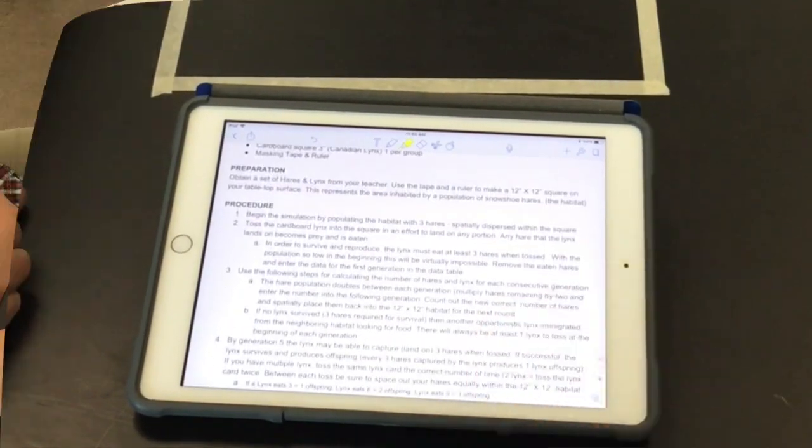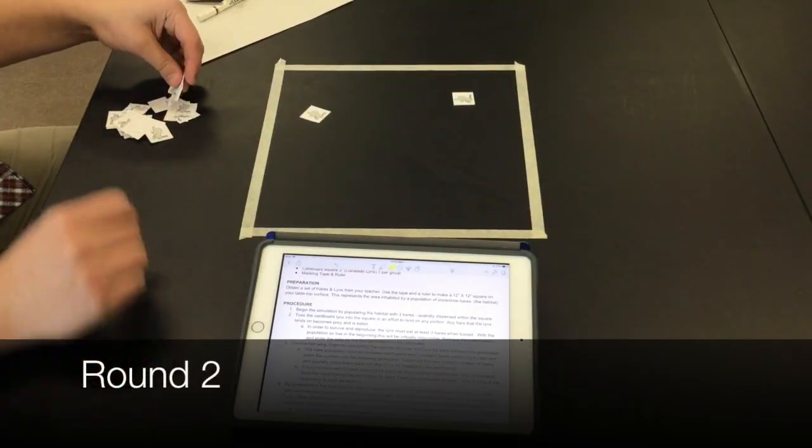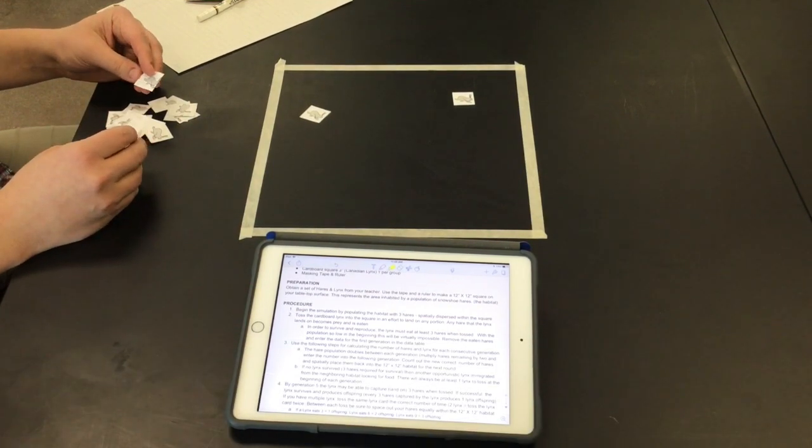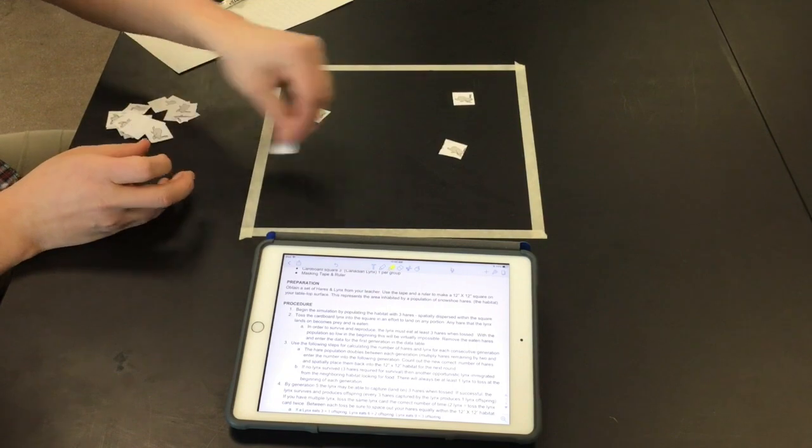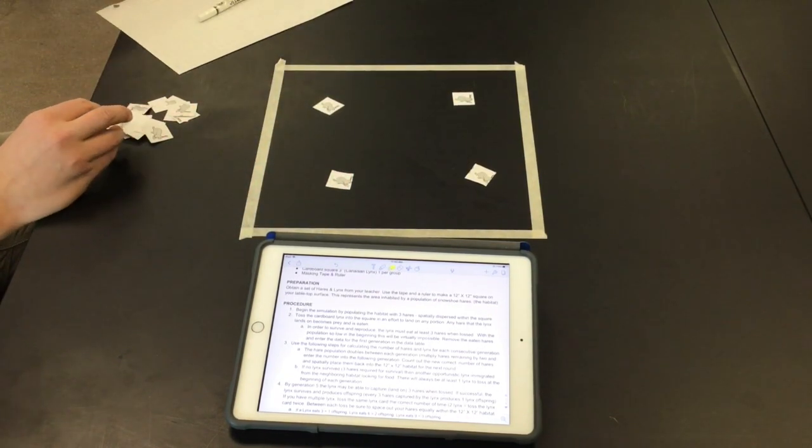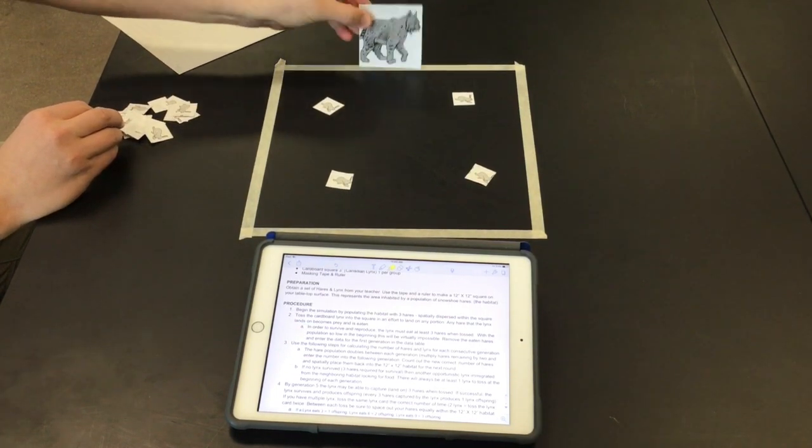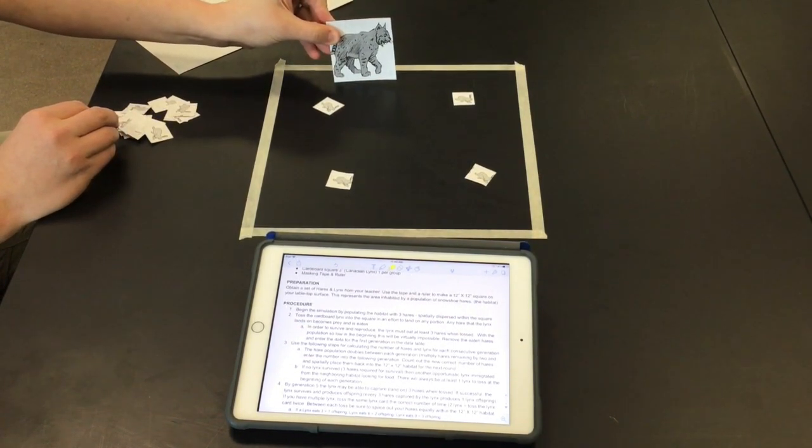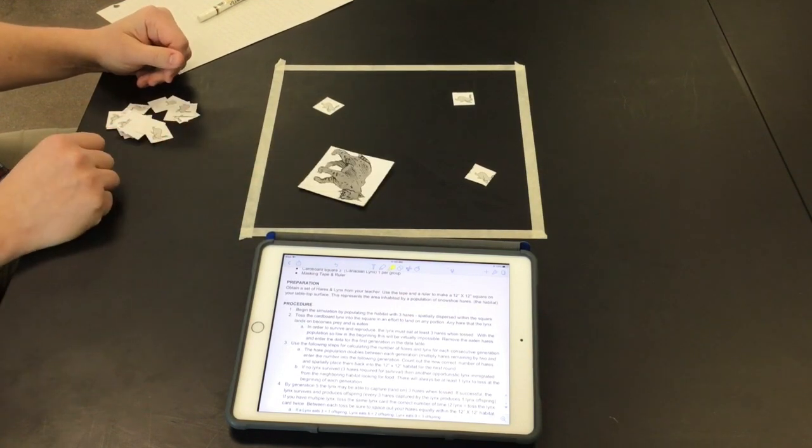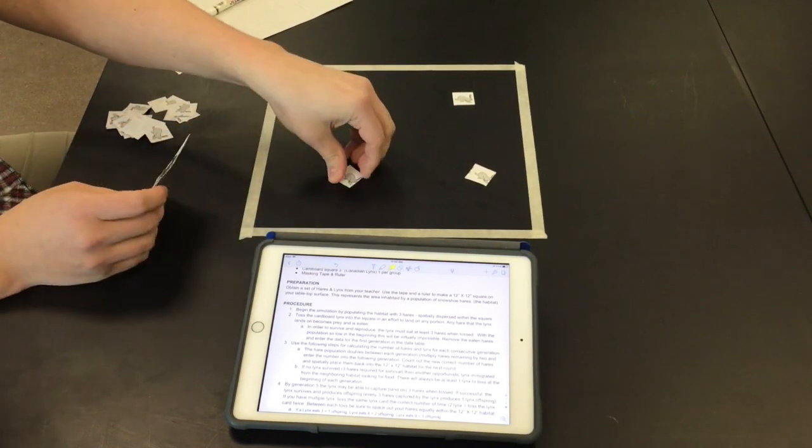All right, so now to start round two we use the same steps and the hair population doubles between each generation. So if we have two then we now double it to four. And then even though the lynx starved, a new lynx enters the habitat and is going to then see how many it can eat this time. So now I have four hairs distributed, go ahead and toss the lynx. Eats one hair and then record that for round two.